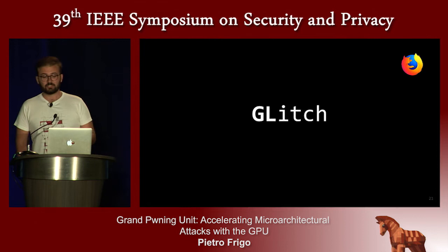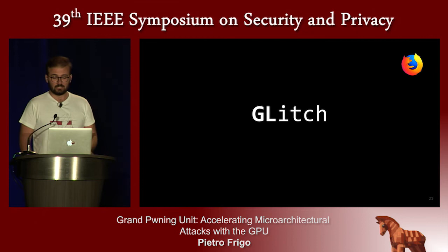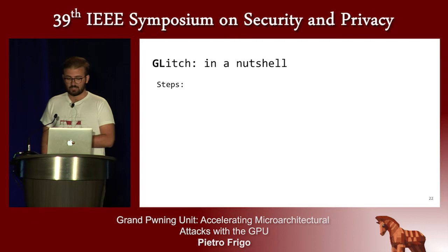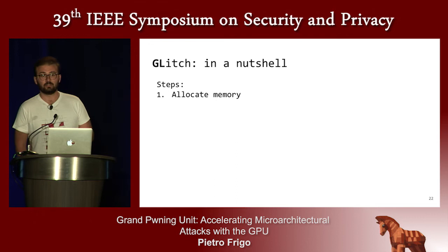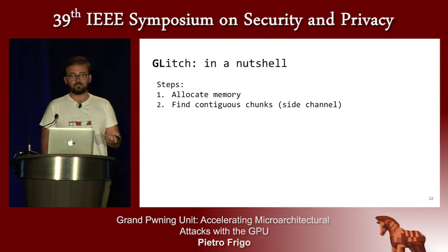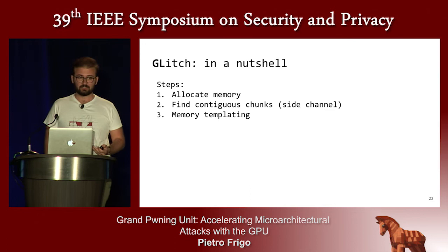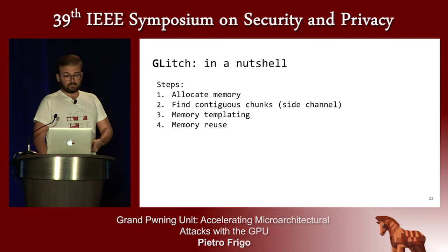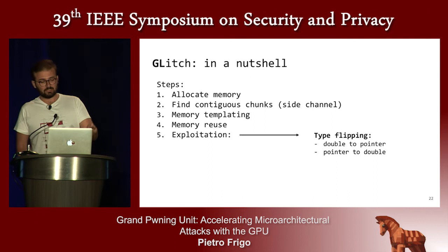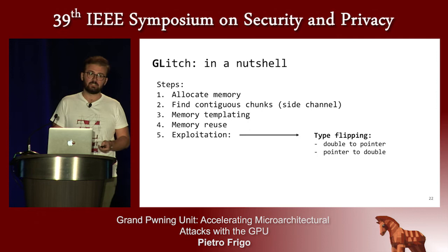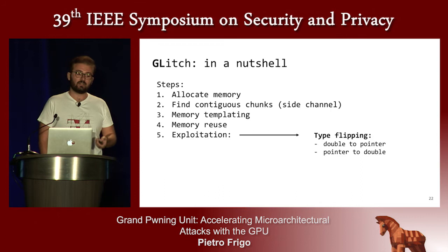Now we have all our primitives. Our goal was to build an end-to-end remote Rowhammer exploit, which we call GLitch, targeting the Firefox browser. GLitch runs in five steps: allocate enough memory to eventually get contiguous chunks; use the timing channel to detect these chunks; perform memory templating — looking for exploitable bit flips; release the memory; then reuse it with the sensitive data to corrupt it.